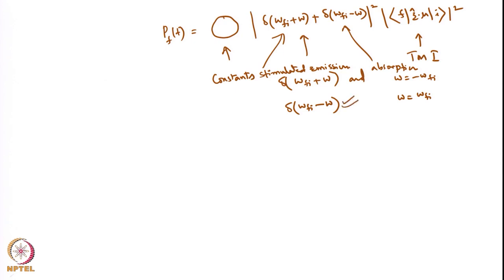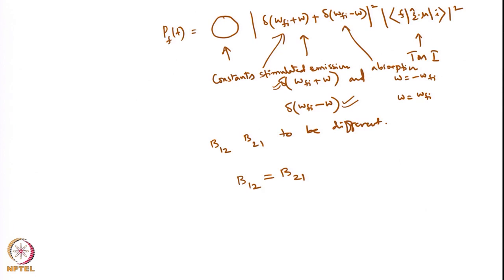For the stimulated emission process, everything else in the equation remains the same — only the delta function changes. Since the transition moment integrals and all other constants are exactly the same, there is no reason for B12 and B21 to be different. Therefore B12 must equal B21, because if the probability is the same, then the rate constant must be the same.